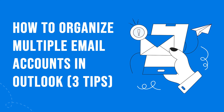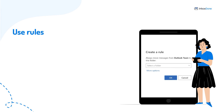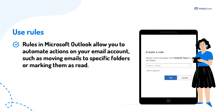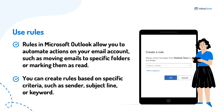Number one: use rules. Rules in Microsoft Outlook allow you to automate actions on your email account, such as moving emails to specific folders or marking them as read. You can create rules based on specific criteria, such as sender, subject line, or keyword.